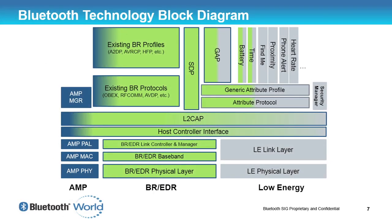Let's go on to Bluetooth architecture. This architecture diagram looks rather complicated but it's fairly simple. On the bottom we have the physical layers — three of them. In the middle we've got classic Bluetooth BR and EDR. On the right hand side we've got Bluetooth Low Energy, and on the left hand side we've got AMP, the Alternate MAC PHY, which in this scenario would typically be an 802.11 PHY.